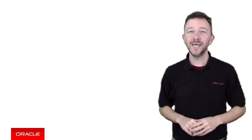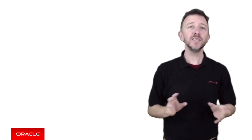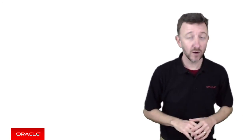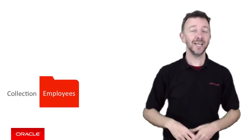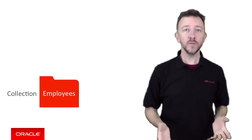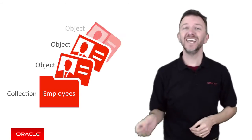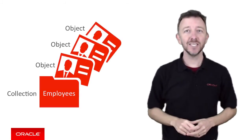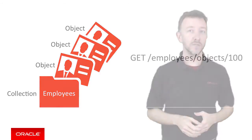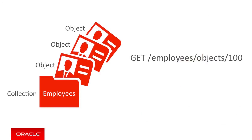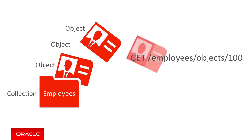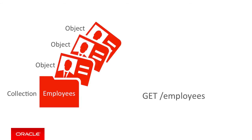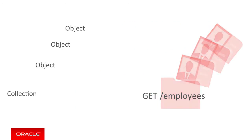What we can explain is that the MCS storage API is built around the concepts of collections — such as a collection of employees — and objects, such as an individual employee in that collection. By design, these collections and objects nicely model the concept of REST resources and their operations. For example, you can GET /employees/objects/100 to retrieve a specific employee from the collection, or GET /employees to get all the employees from the collection.